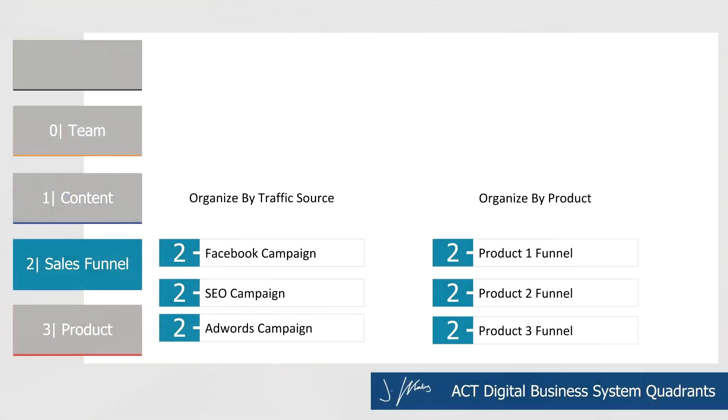The next folder is sales funnel, and this can be organized in two different ways. Number one, it can be organized by traffic source if you only have one product or service offering. Or it can be organized by funnel if you have multiple products and services. If organizing by traffic source, anything you're doing with Google ads, Pinterest ads, Facebook, Instagram, or YouTube ads gets a folder for each traffic source, so all your sales copy, images, and videos for those campaigns are in one easy place.